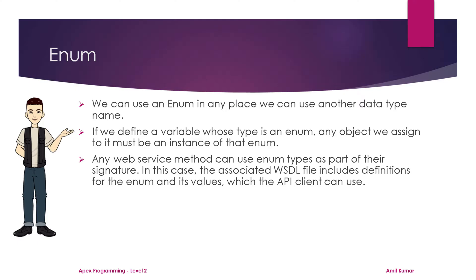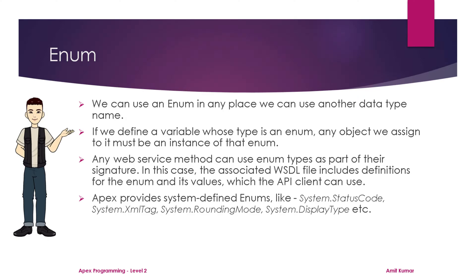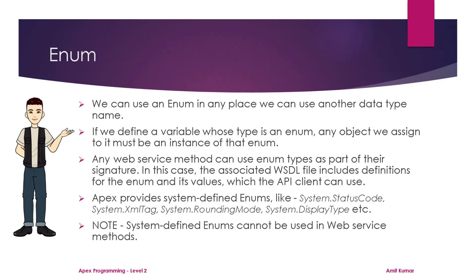Web services are beyond this syllabus, but we will discuss it when we cover web services in our course. Apex provides system-defined Enums like System.StatusCode, System.XmlTag, System.RoundingMode, and System.DisplayType. Note that system-defined Enums cannot be used in web service methods. Enums are well-suited for creating data types for specific sets of names representing statuses, categories, or conditions in a program.